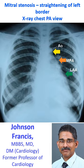The prominent left atrial appendage is also called the third Mughal sign, the first Mughal being the aortic knuckle and the main pulmonary artery the second Mughal. The latter two regions are usually concave, and the obliteration of this concavity contributes to the straightening of the left border.